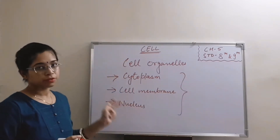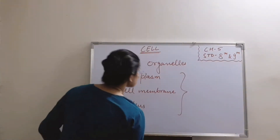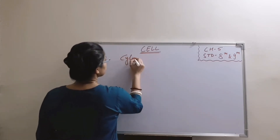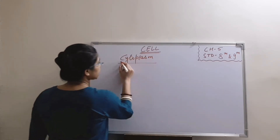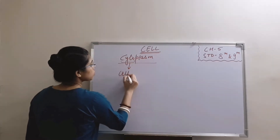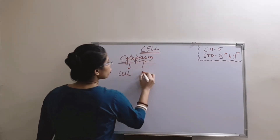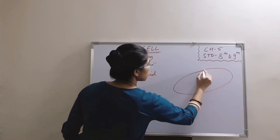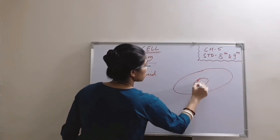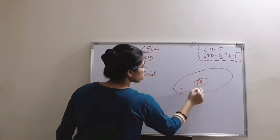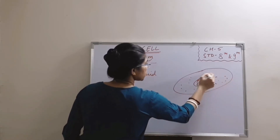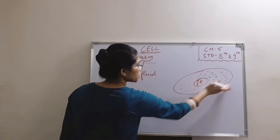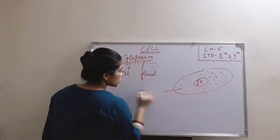We will discuss them one by one. The first is cytoplasm. As the name indicates, 'cyto' means cell and 'plasm' means fluid. So cytoplasm is the fluid which is present inside the cell, outer to the nucleus and inner to the cell membrane.